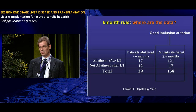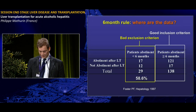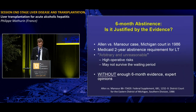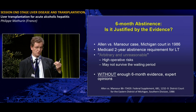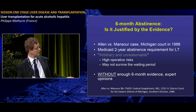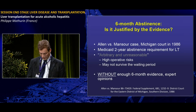A patient with more than six months of sober period has a very low risk of relapse, but you cannot exclude a patient using this criterion because they have a 60% probability of remaining sober after liver transplantation. In 1986, a person sued a liver transplantation center in the United States, and the judge ruled that using a six-month period as a criteria for liver transplantation is arbitrary and unreasonable.